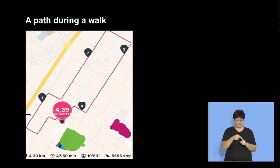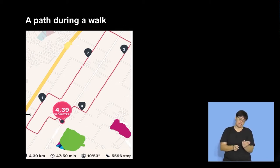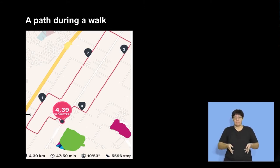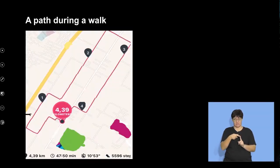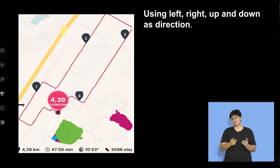She went up, turned a corner, went up again. If I had to describe the path taken, it could be anything — she walked 4.39 kilometers, but did she go straight, or go two kilometers and come back? So here it's about describing where she is from a starting point.